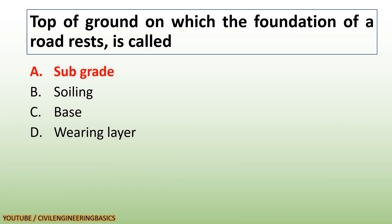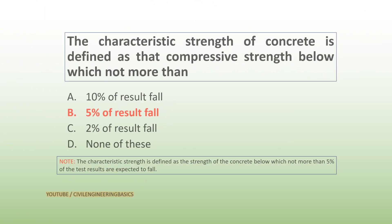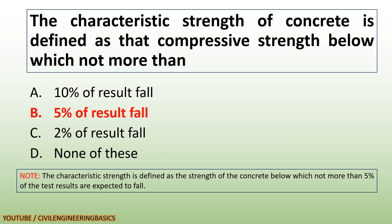The top of ground on which the foundation of the road rests is called subgrade. The characteristic strength of concrete is defined as that compressive strength below which not more than 5% of results fall.